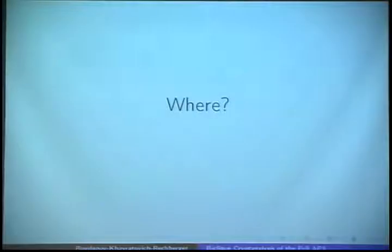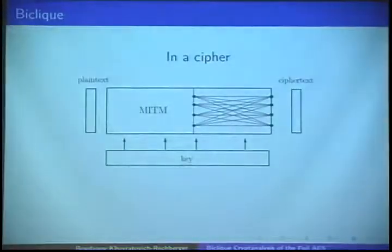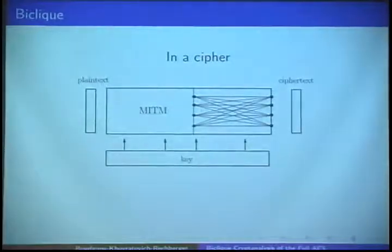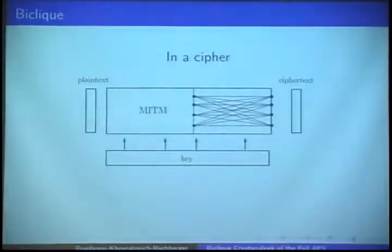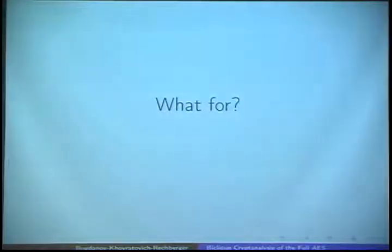Actually, finally, the graph we actually have is even more dense, but it doesn't make so much sense. Where is it applied? We start with simple basic meet-in-the-middle attacks and then use the biclique structure to extend it from around. We have a cipher here with plaintext inputs, key input, and ciphertext output, and we can extend the number of rounds.